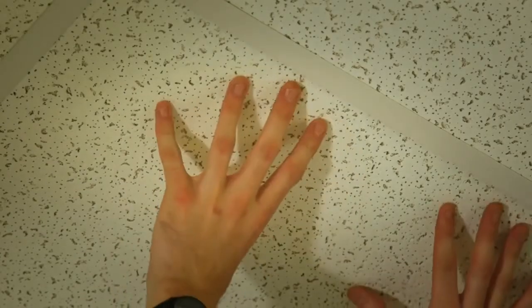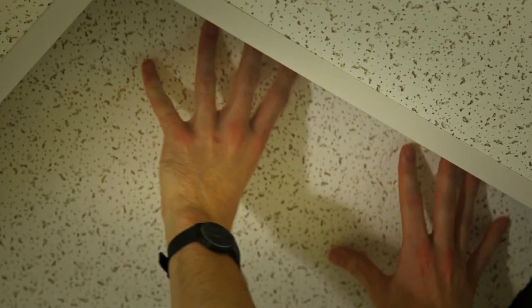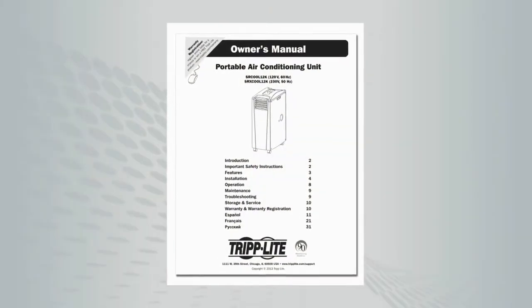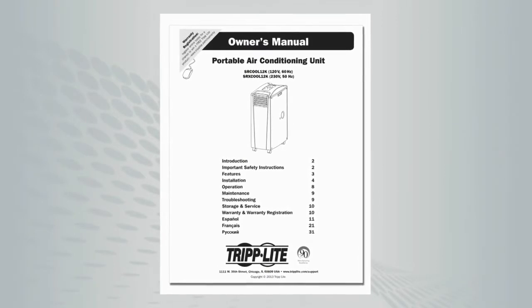The SR-Cool 12K can be exhausted to a window opening or drop ceiling plenum space. In this video, we will demonstrate exhausting into a drop ceiling plenum. For more information on window exhaust installation, please refer to your owner's manual.